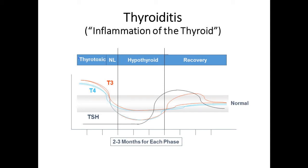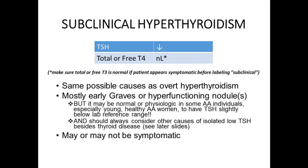Subclinical hyperthyroidism simply means the TSH is low — 0.2, 0.3, 0.01, undetectable — but T4 and T3 are fine. Causes are often early Graves or early functioning nodules. An important point: it may actually be normal for some people to have a slightly low TSH below the reference range. Some African American individuals, especially young healthy African American women, just have a TSH of 0.35 or 0.3 as their normal. This is a failure of our reference range system to accommodate different populations. When I see young, healthy African American women with no family history, no goiter, no antibodies, I tell them they could have really early disease — in which case I wouldn't treat them anyway — or they may just have a normal variant.